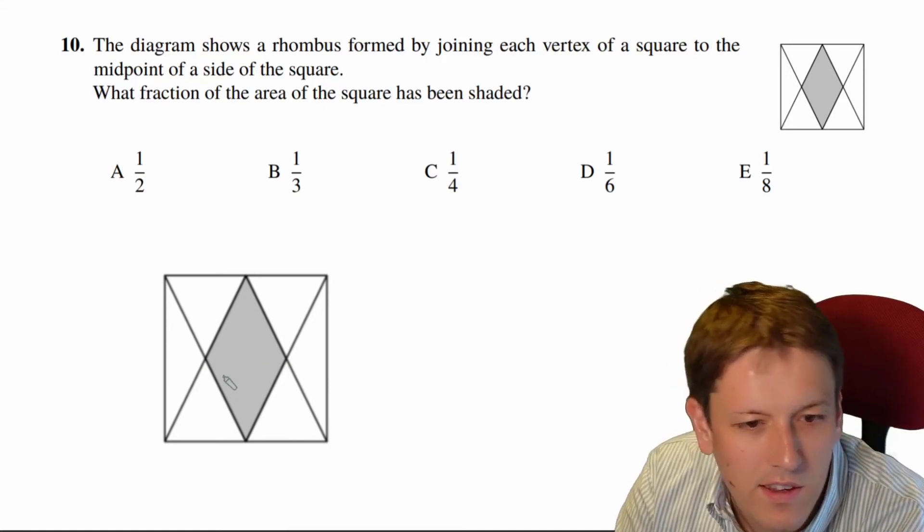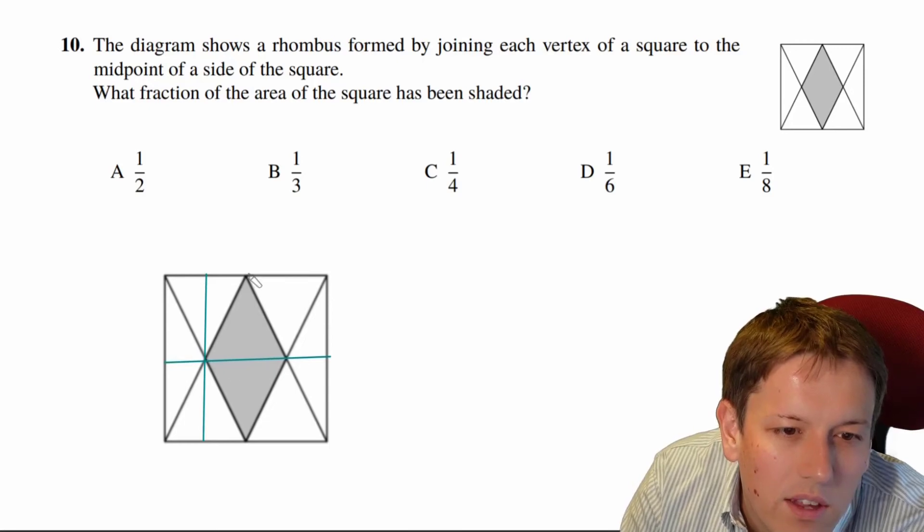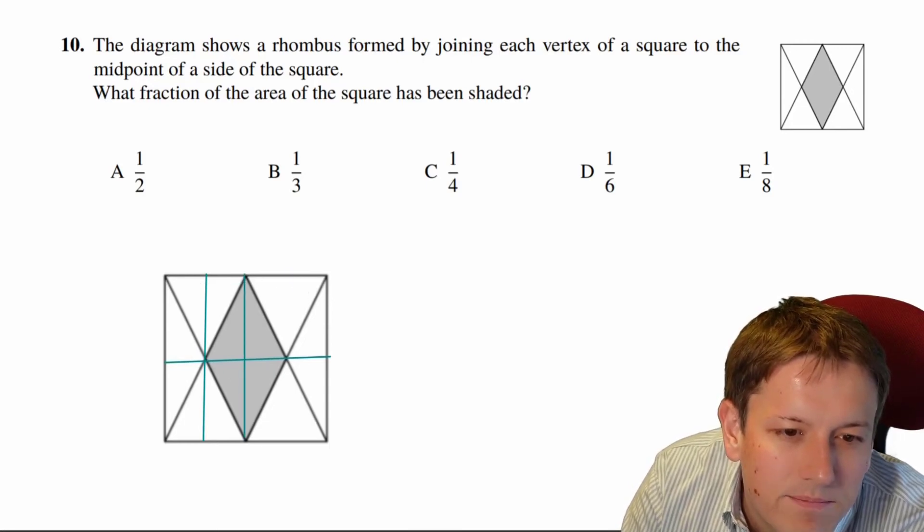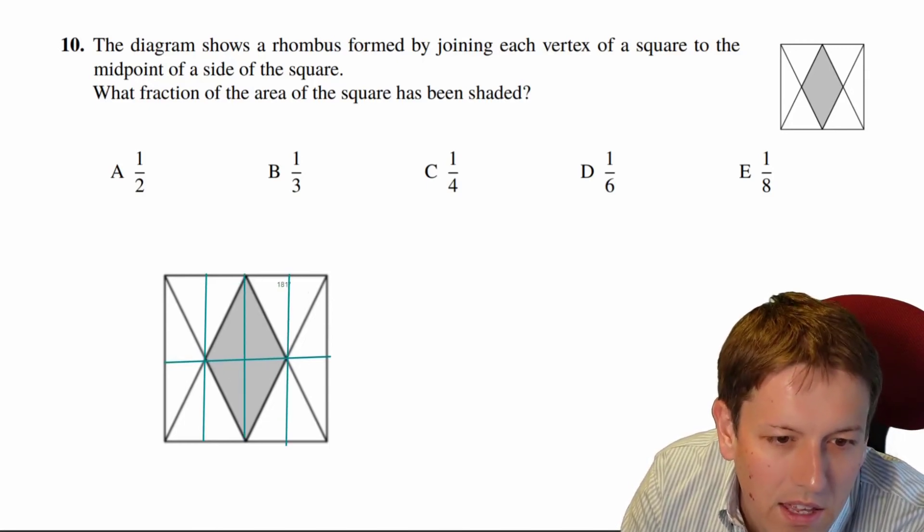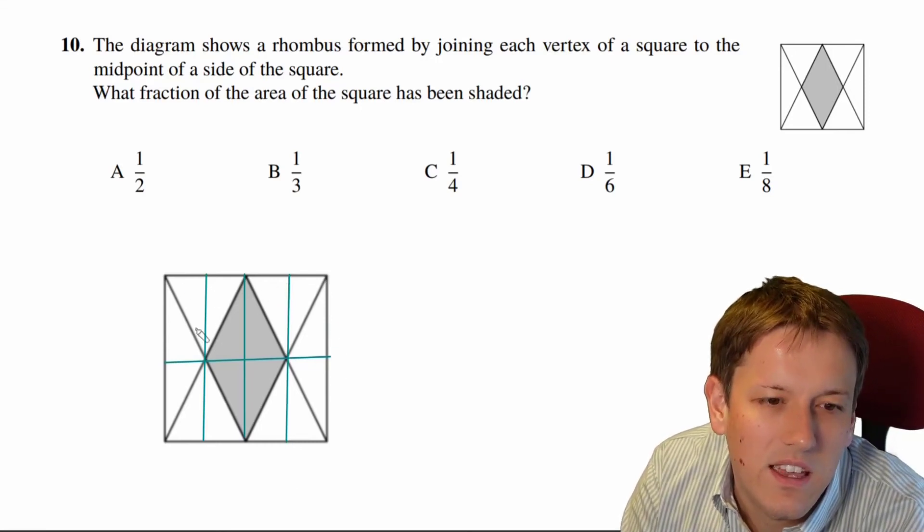Let me see if I can do that a bit more accurately there. So I'm going to put a line through here, a line through here, a line down here, and a line down here. And now you can see, I think, that all of the triangles that I formed have exactly the same area.